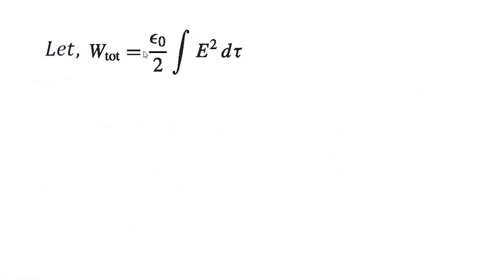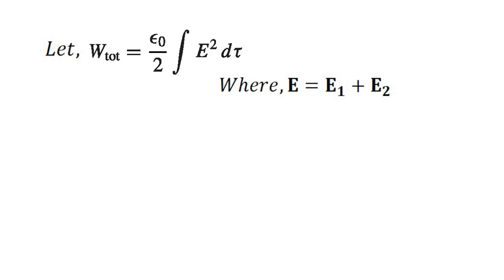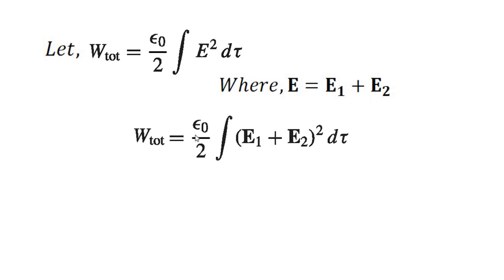Let W equal to ε₀/2 times the integral of E² dτ. This is the total energy equation where E equals E₁ plus E₂. We will substitute this into the equation, so W_total equals ε₀/2 times the integral of (E₁ + E₂)² dτ.